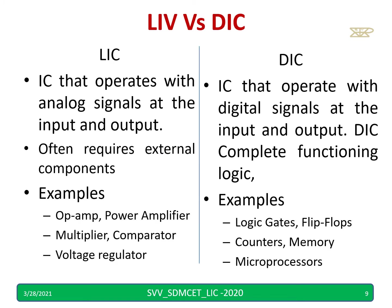Comparing LIC and DIC: LIC operates with analog signals, while digital IC operates with digital signals. Digital IC is a complete functioning logic. In the case of LIC, it often requires external components — you are supposed to connect a resistor, capacitor, etc. But with DIC, you do not connect any resistor or capacitor.